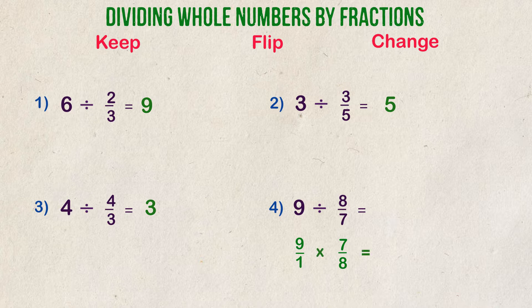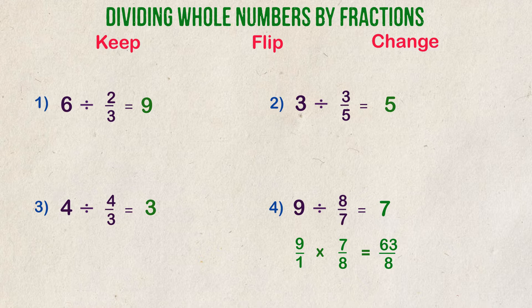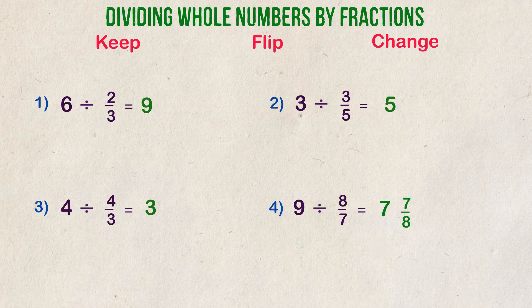9 times 7 is 63, and 1 times 8 is 8. Now, 8 can go into 63 a total of 7 times. 8 times 7 is 56. When you subtract that from 63, you get a remainder of 7. That remainder of 7 is placed over the 8, and our final answer is 7 and 7 eighths.